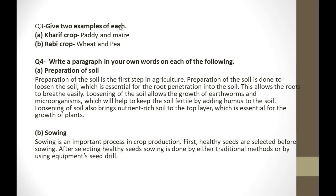The next question asks for two examples of each. Kharif crop: paddy and maize. Rabi crop: wheat and pea.